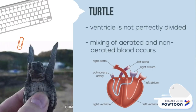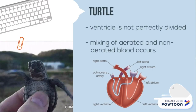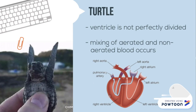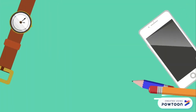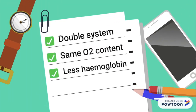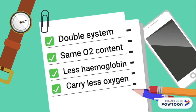The ventricle of the turtle is not perfectly divided, and some slight mixing of aerated and non-aerated blood can occur. Despite the peculiar and complex circulation, lizards, snakes, and crocodilians have achieved a double system. Oxygen content in both systemic aortas is as high as that of the blood received by the left atrium from the lungs, and is much higher than that of the blood in the pulmonary artery.